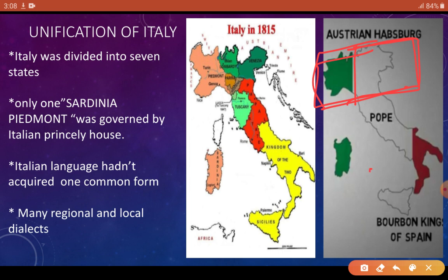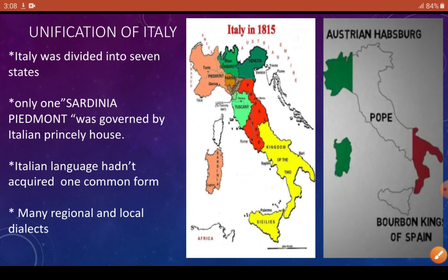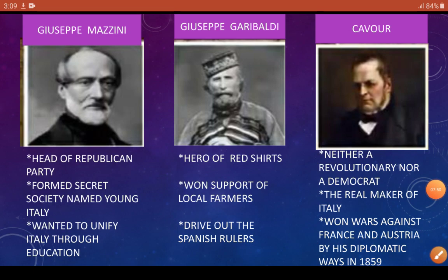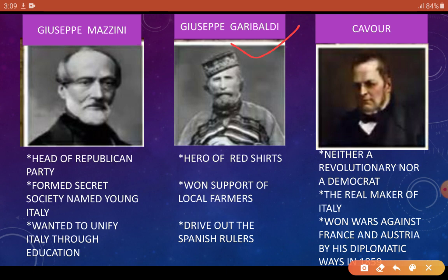Now let us move to the southern part, where the Bourbon king of Spain was ruling. The important role in unifying the southern part was played by Giuseppe Garibaldi. Here is the man, Giuseppe Garibaldi. He started a movement called Red Shirts — soldiers who wore red shirts, so it became known as Red Shirts. He recruited the local farmers and defeated the Spanish Bourbon dynasty.